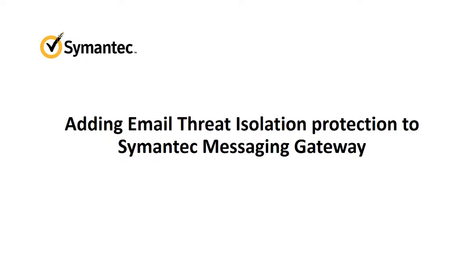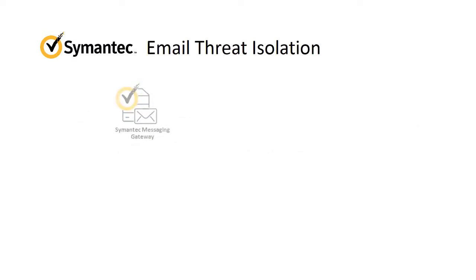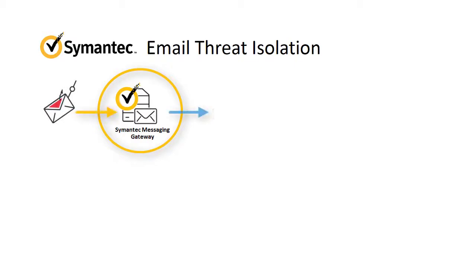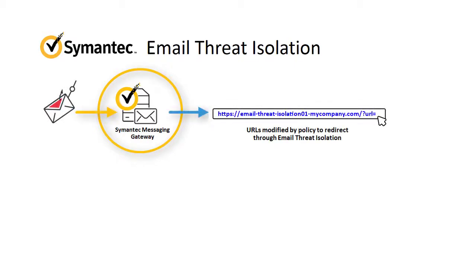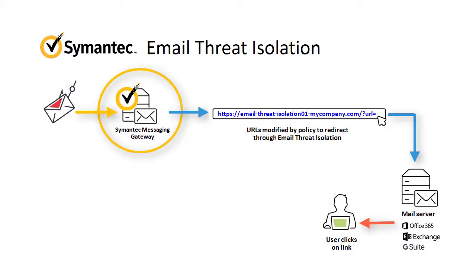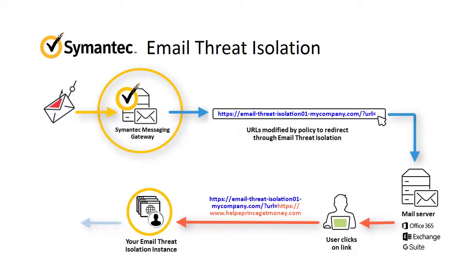Now let's take a look at how Semantic Messaging Gateway and email threat isolation work together to protect your users. In the Semantic Messaging Gateway Control Center, you add a content filtering policy that applies to all incoming messages. When Semantic Messaging Gateway receives a message, this policy modifies every URL in the message to point to your email threat isolation instance. After the message is delivered and a user clicks a modified link, the browser redirects to email threat isolation. From there, the user gets the same experience as when they browse the web directly, but they're protected by the threat isolation technology.